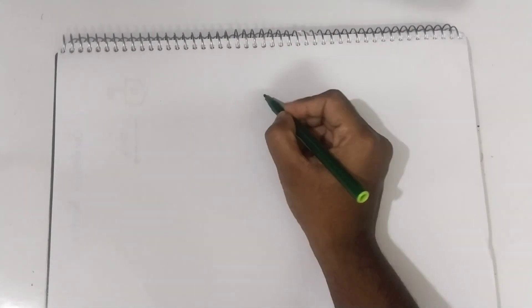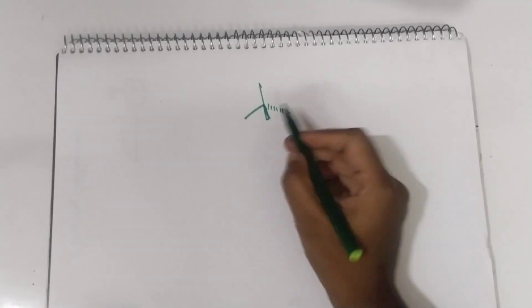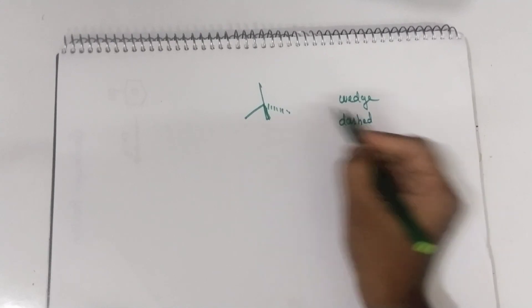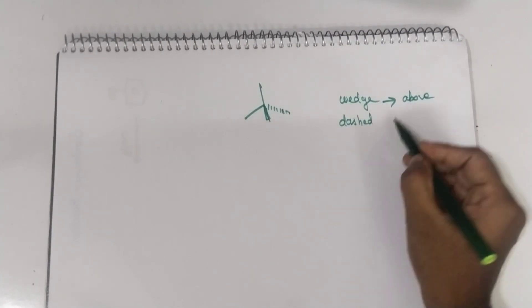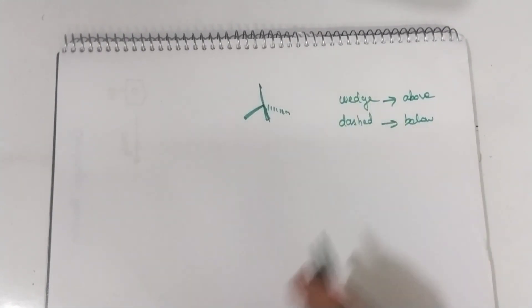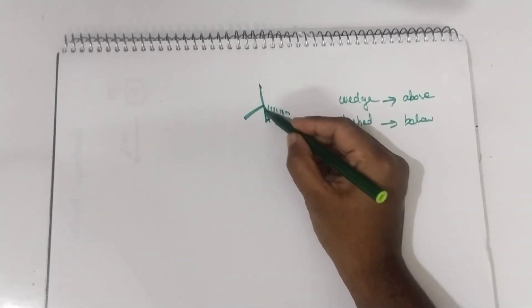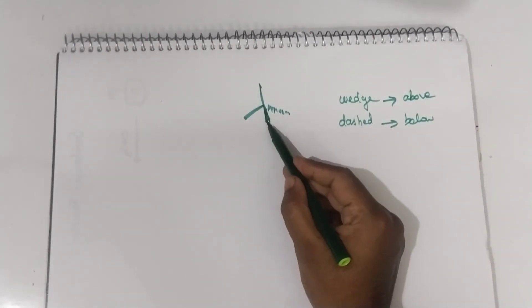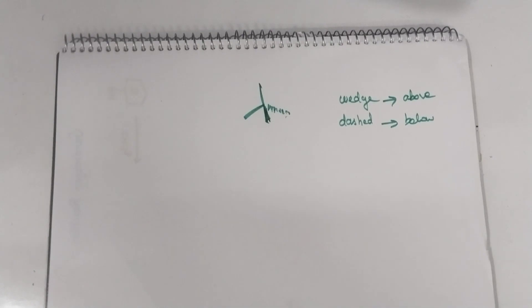First of all, what is flying wedge projection? This is known as a wedge, and this one is a dashed line. This is dash and this is wedge. Wedge means above the plane, and dash means below the plane. These solid lines represent bonds that are on the plane. The wedge group is present above the plane — projecting towards us — and the dashed one is away from us. This is what the flying wedge projection is.